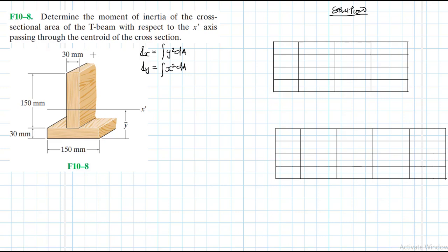We are also being asked to first find the centroid along the Y axis, which is defined as Y-bar. Y-bar is equal to the summation of the local centroid locations of the parts times area, divided by summation of the area. So let's define the parts quickly.